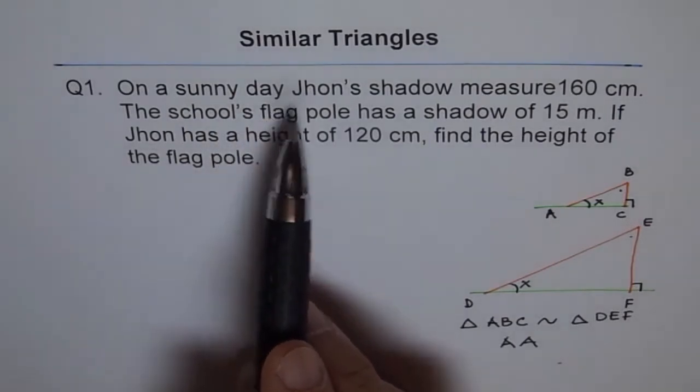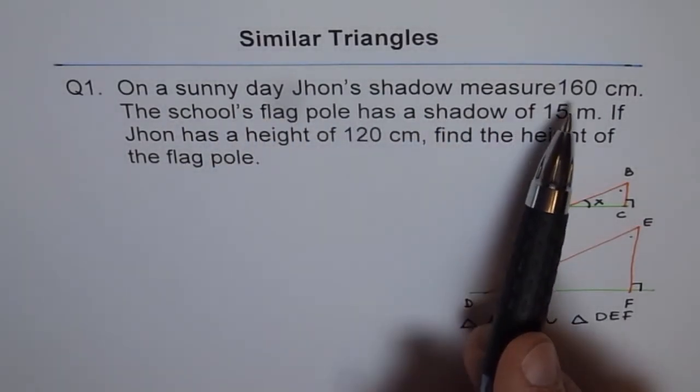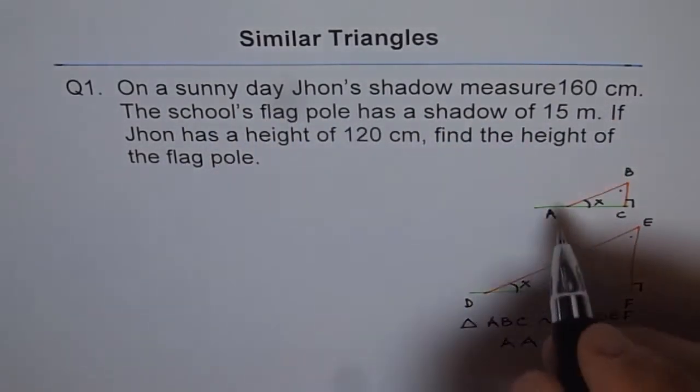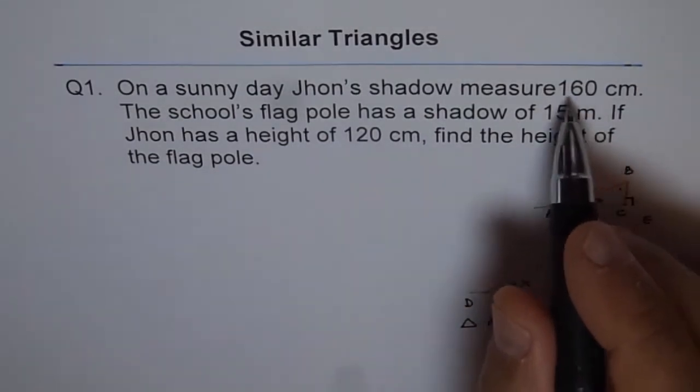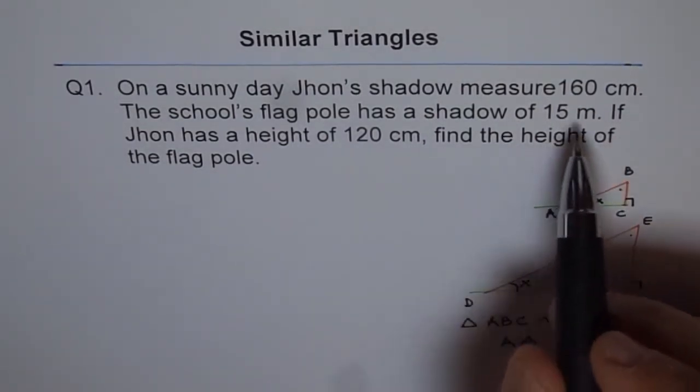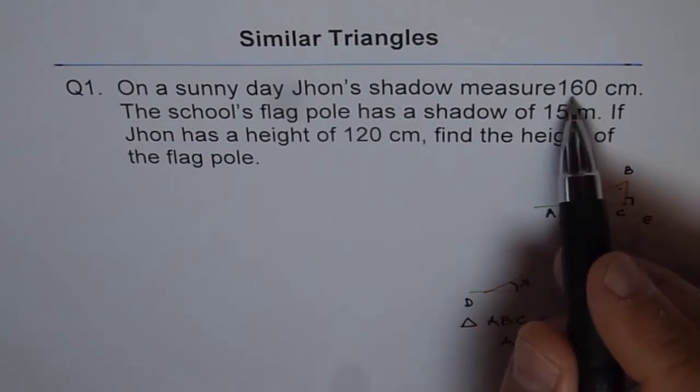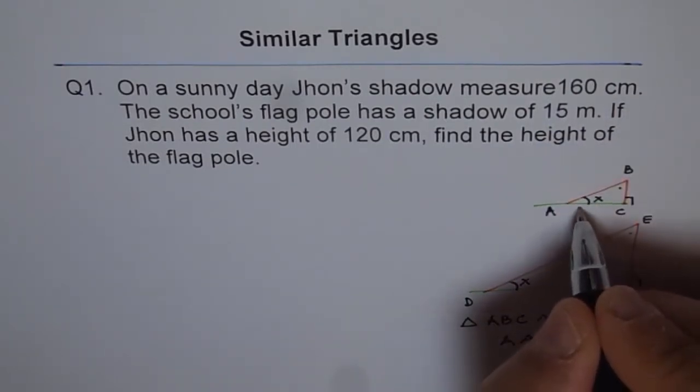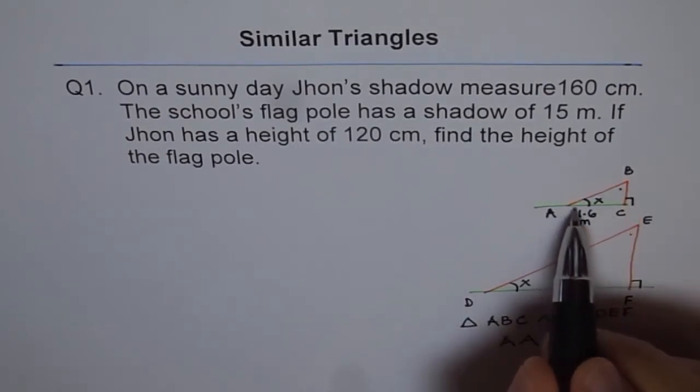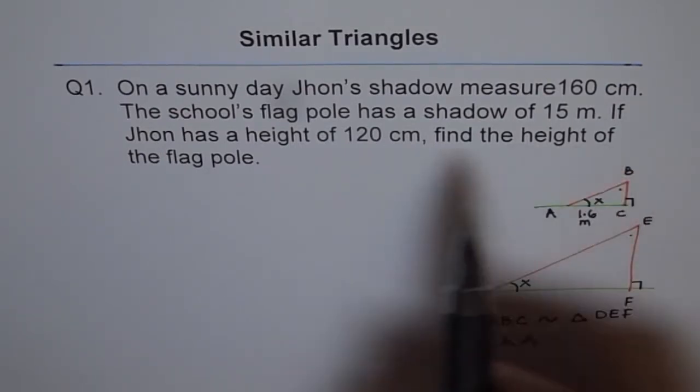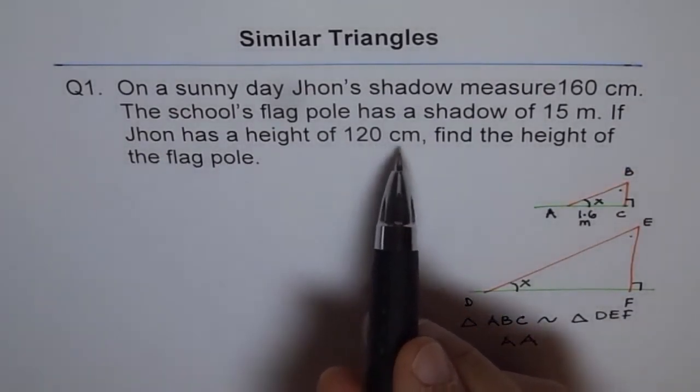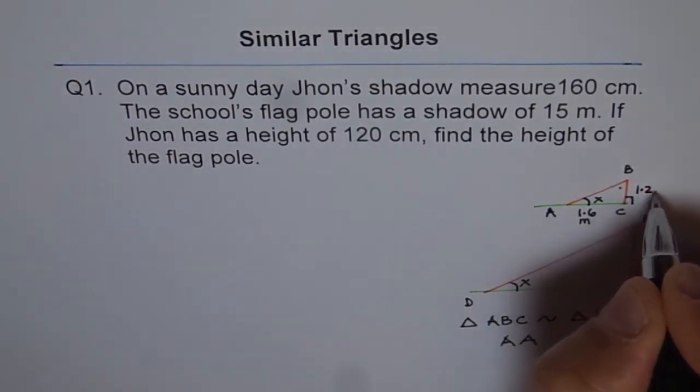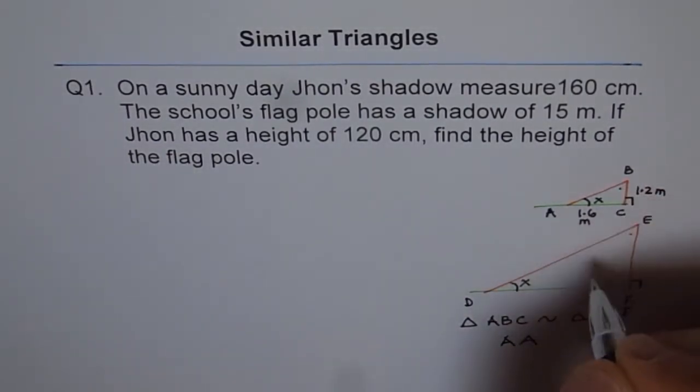On a sunny day, John's shadow measures 160 cm. So this is 160 cm, right? So since the flag is in meters, let me convert them into meters itself. So let me write this as 1.6 meters. So that is the length of the shadow. If John's height is 120 cm, let me write this as 1.2 meters, right? Height of John.